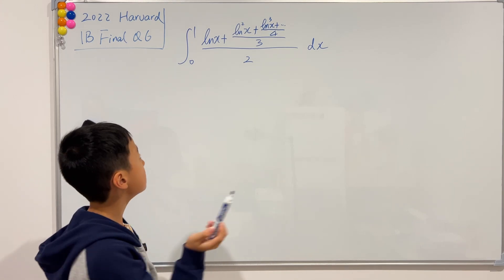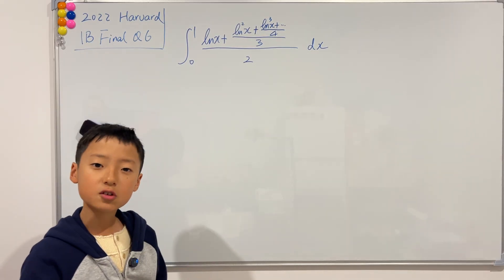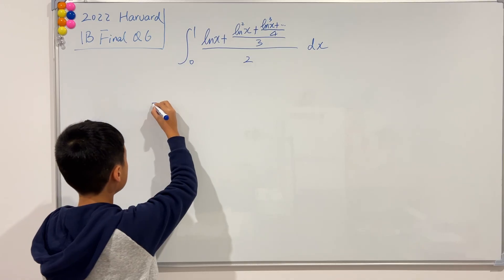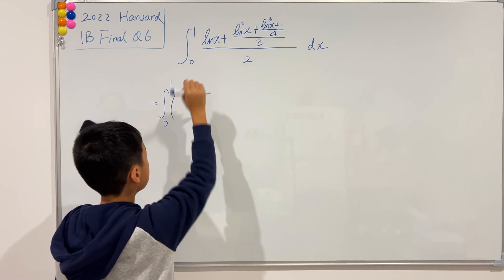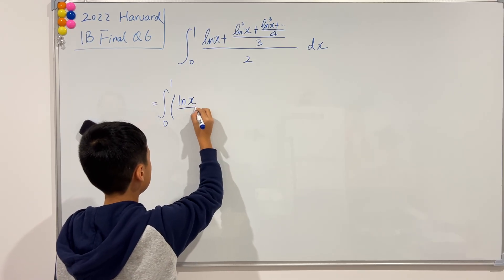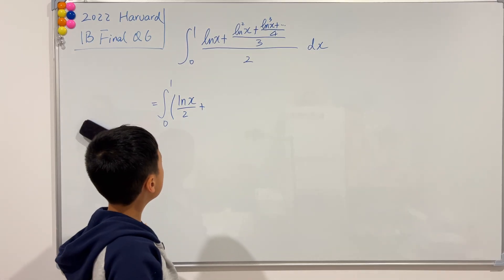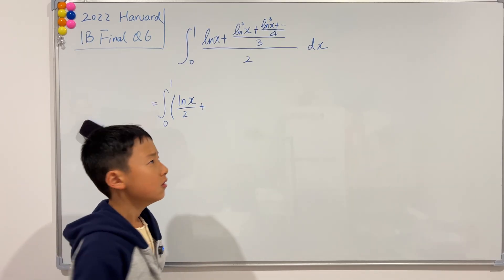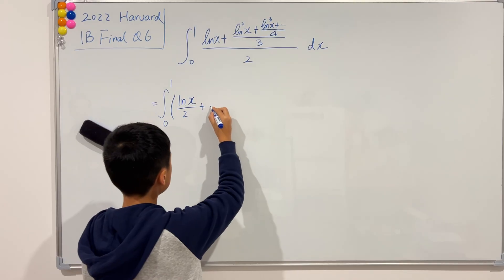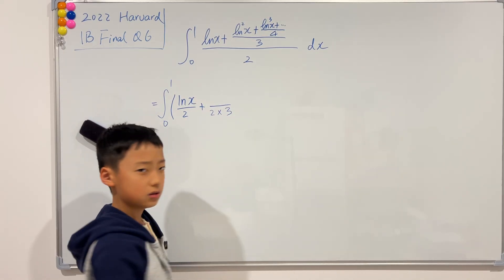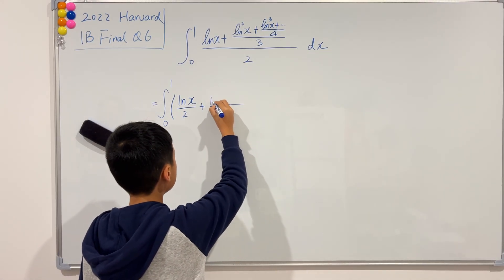Partial fractions says that we can just separate this into the first term over 2 and the second term over 2, and that's actually what we're going to do. So this is equal to the integral from 0 to 1 of ln(x) over 2, and then we add that whole big fraction over 2. I'm going to multiply the 3 to the bottom, so the bottom becomes 2 times 3, and the top is ln squared of x.